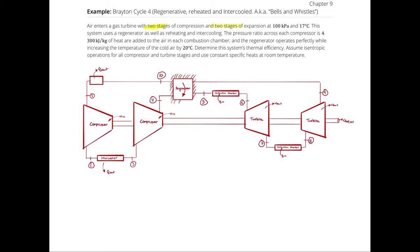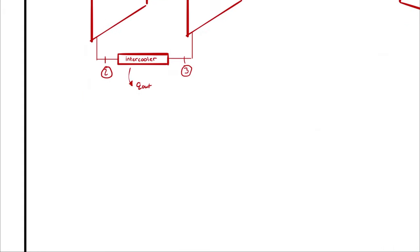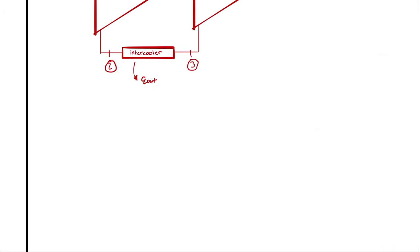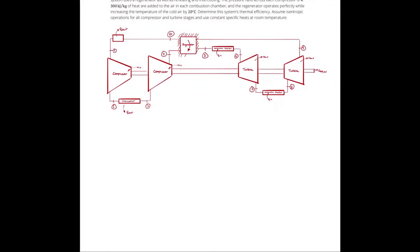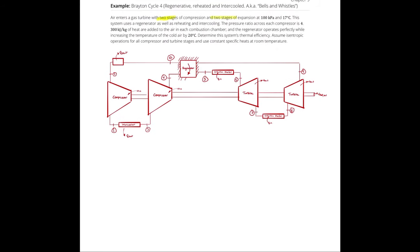I have 10 state points, so I will start by building a table. The problem instructs us to assume constant specific heats at room temperature, so this is a cold air standard analysis. It's worth noting that you should also be proficient analyzing without the cold air standard — you could look up all your enthalpies by knowing your reduced pressures and calculating the pressure ratio using PR1 and PR2.